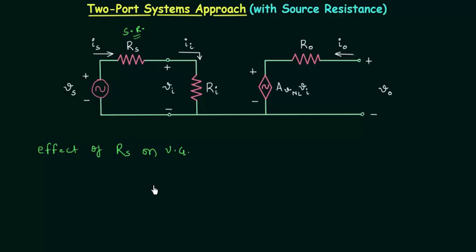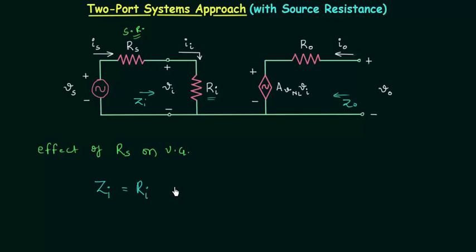First we will talk about input impedance and output impedance. We already know the input impedance is the impedance seen from these two terminals, and the output impedance ZO is the impedance seen from these two terminals. You can clearly see the input impedance is equal to resistance RI. This is the same as compared to the two-port system having the load resistance RL.